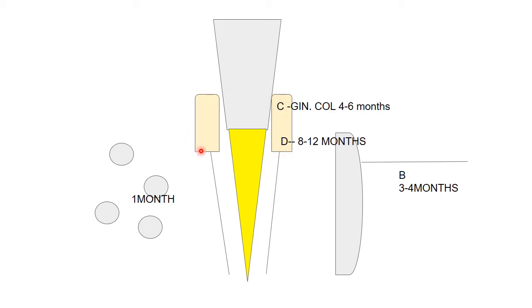On the mesial and distal aspect we have the gingiva, which contains multiple fibers. The gingival collagen fibers take four to six months to reorganize. Just above the crest of the alveolar bone, we have supracrestal fibers. These supracrestal gingival fibers take eight to twelve months — almost a year — to remodel. These fibers contain elastin, are highly elastic in nature, and tend to pull the tooth back into its old position. This is particularly applicable in cases of rotational correction. If a patient has a rotated central incisor and derotation is carried out but the patient does not wear the retainer for at least a year, there is a higher chance of relapse due to the supracrestal elastic fibers.